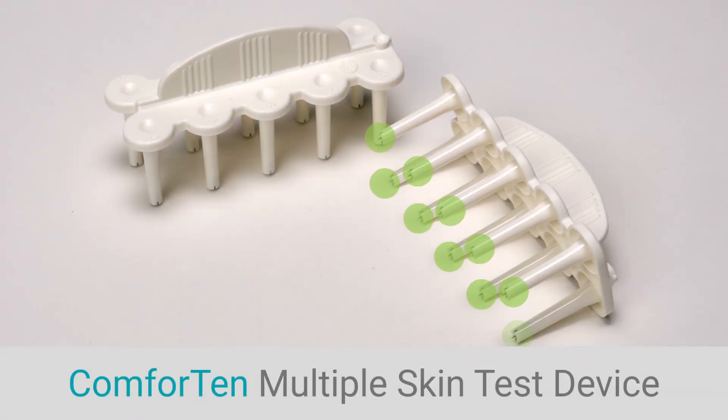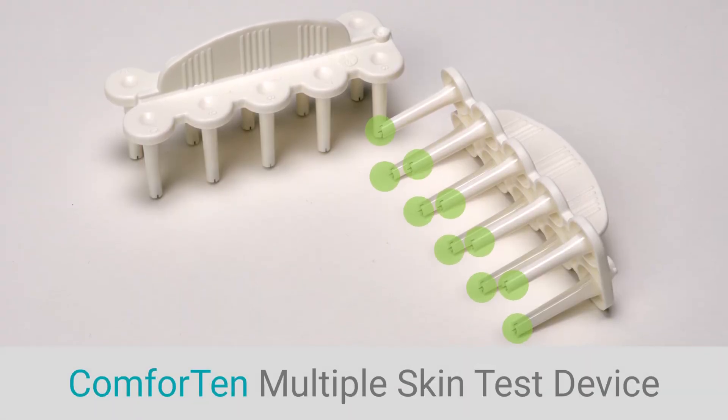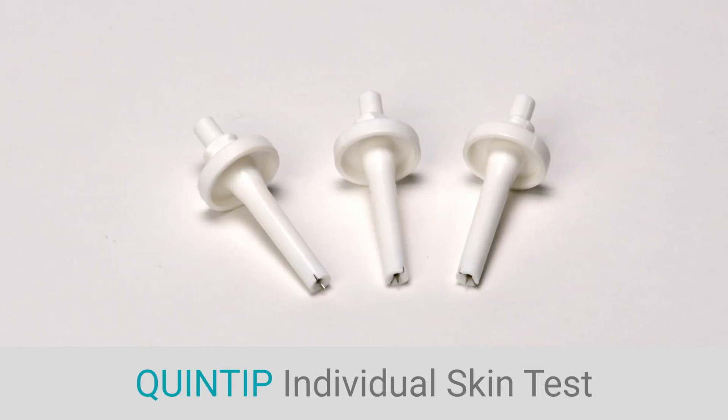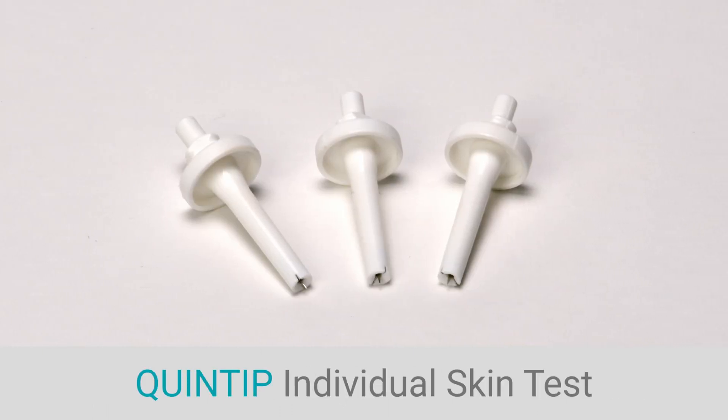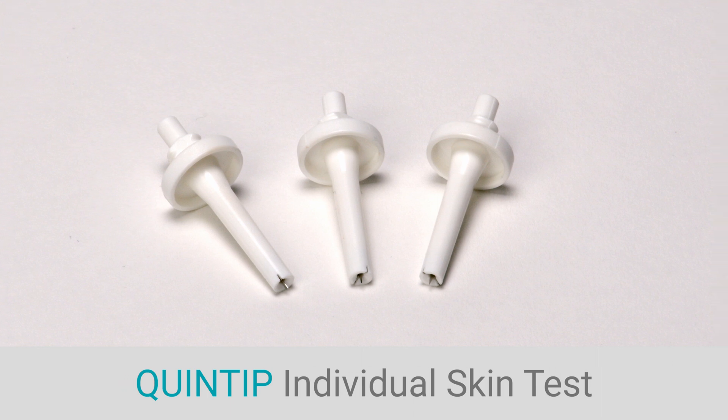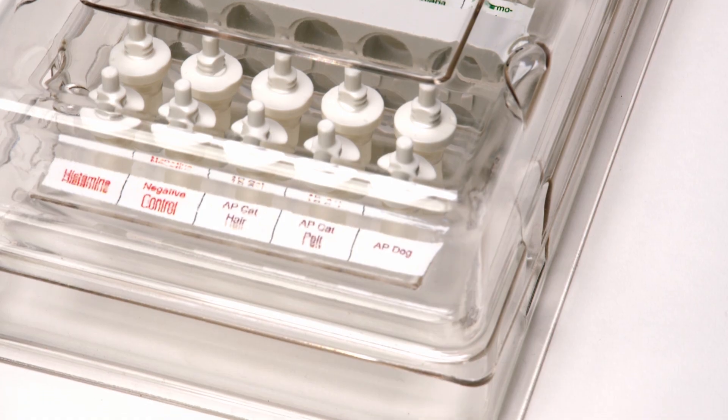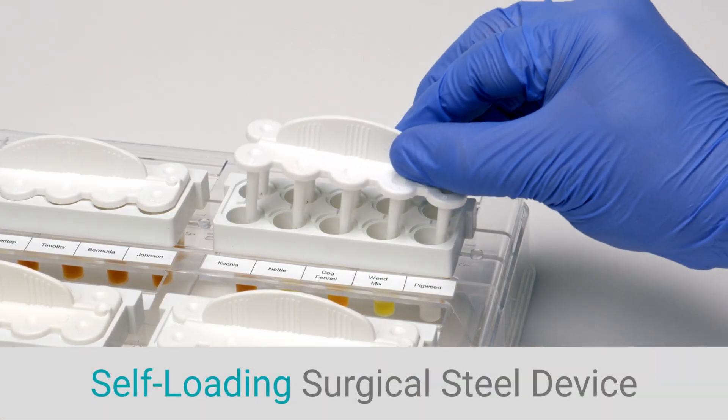The Comforten multiple skin test device applies 10 tests quickly and precisely. Quintip is an individual skin test device and is ideal for testing antigens not included in your normal panel. Both Comforten and Quintip are the only self-loading surgical steel tipped skin test devices on the market.